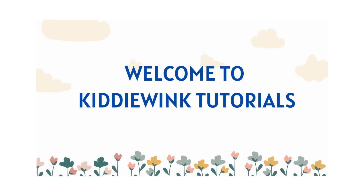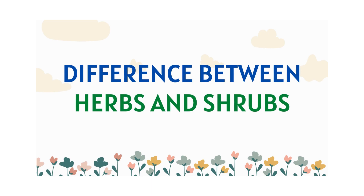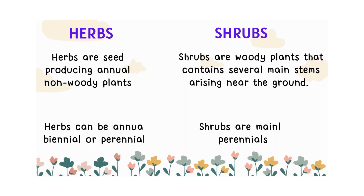Welcome to Kidowing Tutorials. Difference between herbs and shrubs. Herbs are seed-producing annual non-woody plants, whereas shrubs are woody plants that contain several main stems arising near the ground. Herbs can be annual, biennial, or perennials.